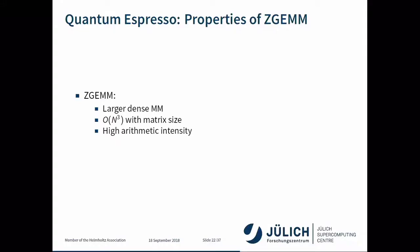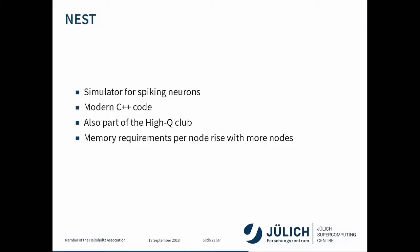A word on ZGEMM in Quantum Espresso: this is large dense matrix multiplication with higher arithmetic intensity. The other kernels also contribute less than 5% to the overall compute time.